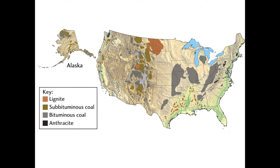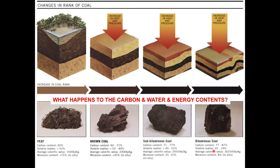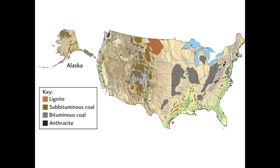On the East Coast we have high-grade coal — anthracite and bituminous coal — with higher carbon content. Coal in the western states — the Rocky Mountain region including New Mexico, Colorado, Arizona, Utah, Wyoming, Montana, North Dakota, and South Dakota — has some bituminous coal but no anthracite, and a lot of sub-bituminous coal and lignite. So the energy content of coal in the western states is lower than the energy content of coal in the eastern states.